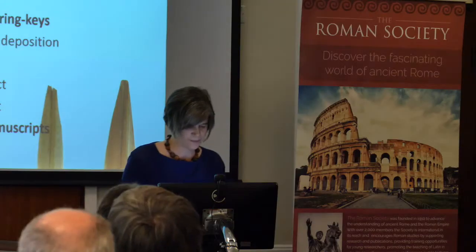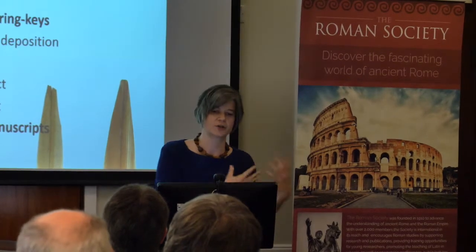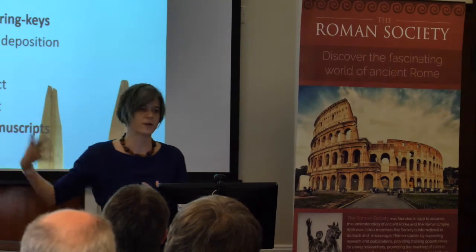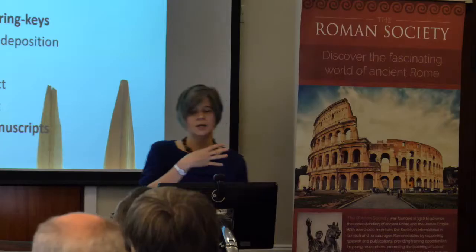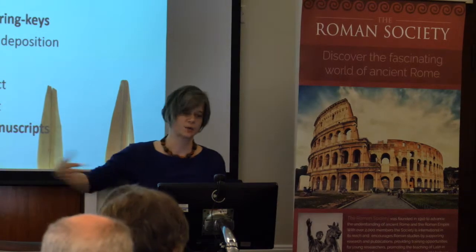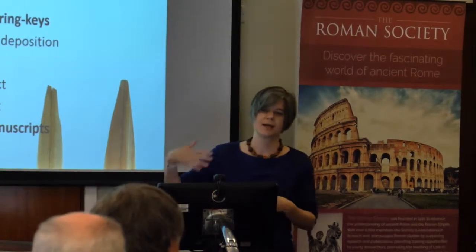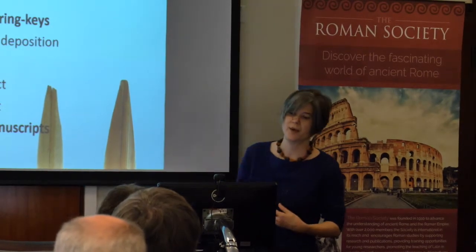Function can be quite a difficult question to address. What we can do is look at other sources of evidence and interrogate functional features by comparing them with other evidence. One of the things we can do is look at the wear on objects, because if we look at the wear then we can begin to evaluate whether those objects were used for the purpose for which they were designed or whether they were used in different ways.